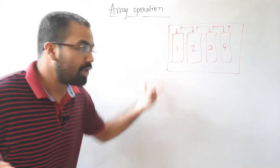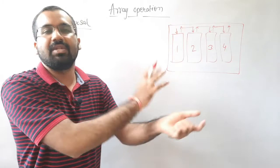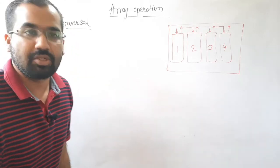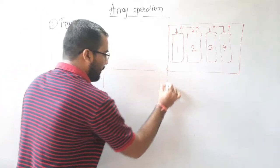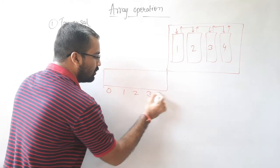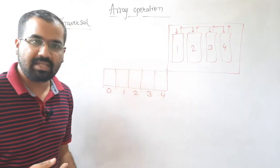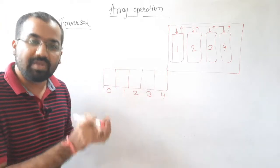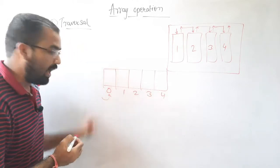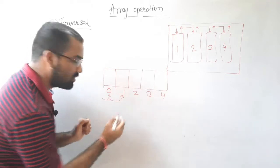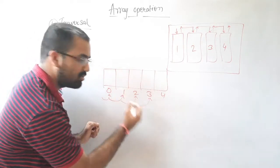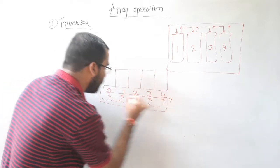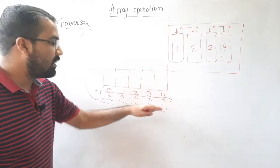What you basically did here is nothing but a traversal — you visited each house once and gave them sweets. That is the same behavior you are going to see in an array. Traversal means you are going to visit each element in that array once — at index zero, then index one, two, three, four, and so on. This particular behavior is called a traversal operation.